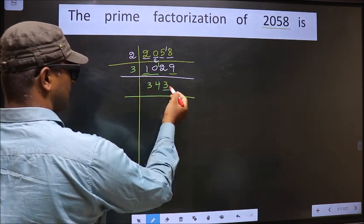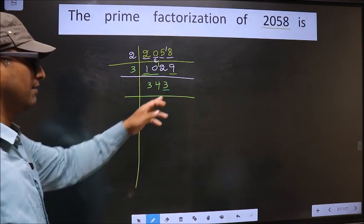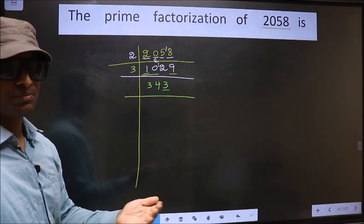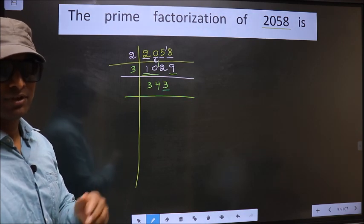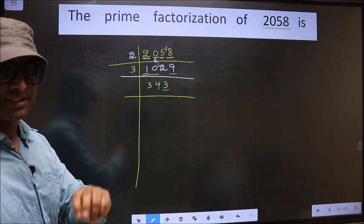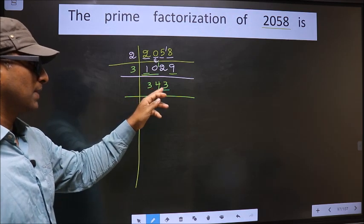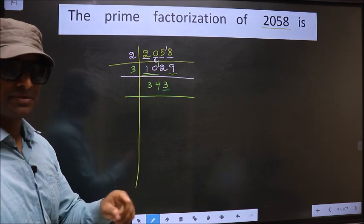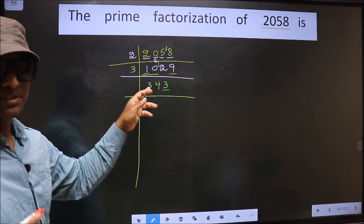Now for this number, the last digit is 3, which is not even. So this number is not divisible by 2. Next prime number 3. To check divisibility by 3, we should add the digits. That is 3 plus 4 plus 3, we get 10. Is 10 divisible by 3? No. So this number is also not divisible by 3.